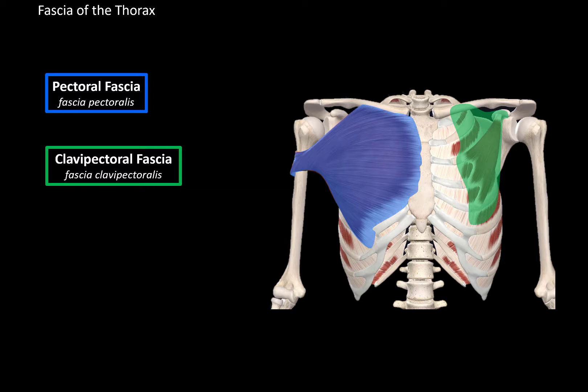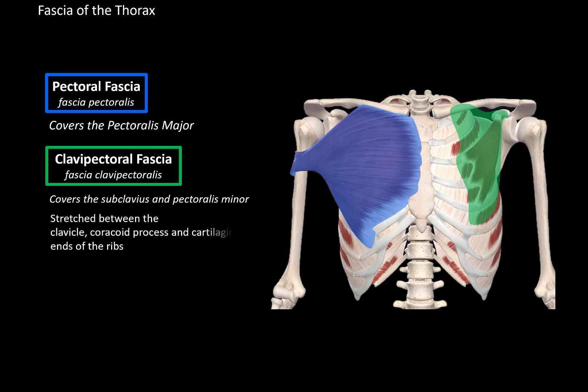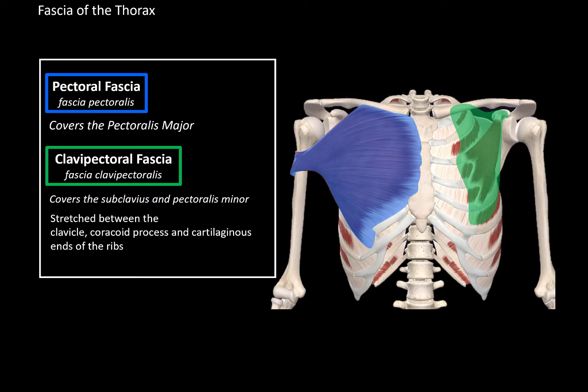These two fascias are pretty simple. The pectoral fascia covers the pectoralis major, as you see here in blue. And the clavipectoral fascia covers the subclavius muscle and the pectoralis minor, which are both located underneath the pectoralis major. The clavipectoral fascia is stretched between the clavicle, coracoid process, and the cartilaginous ends of the ribs, as you see here. These two fascias are considered the superficial fascia of the thorax.